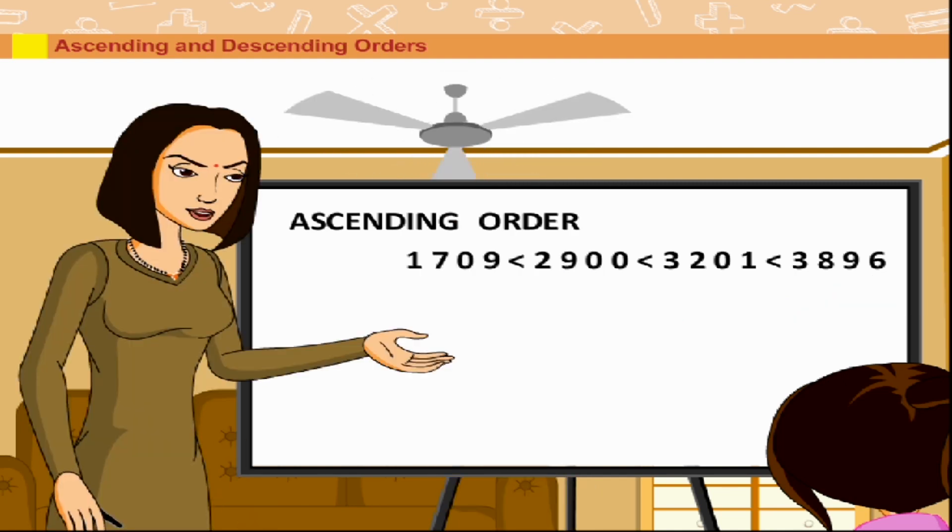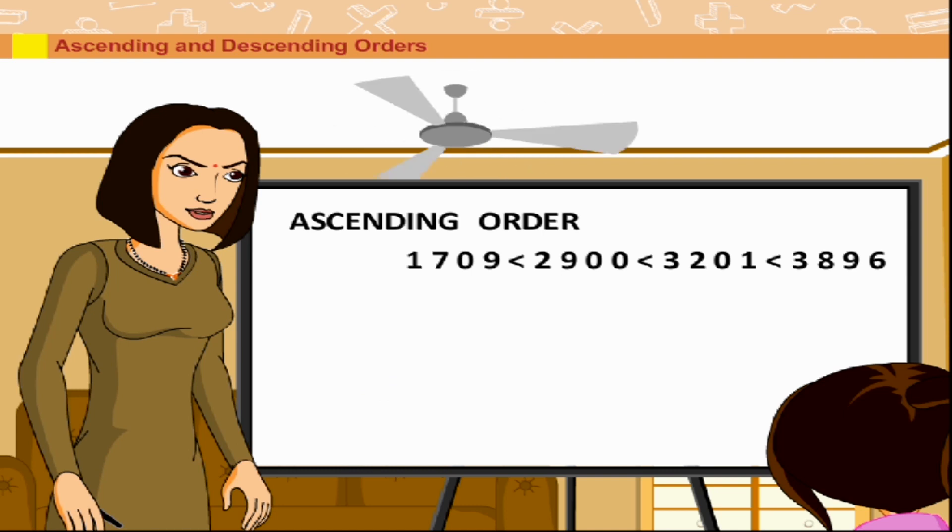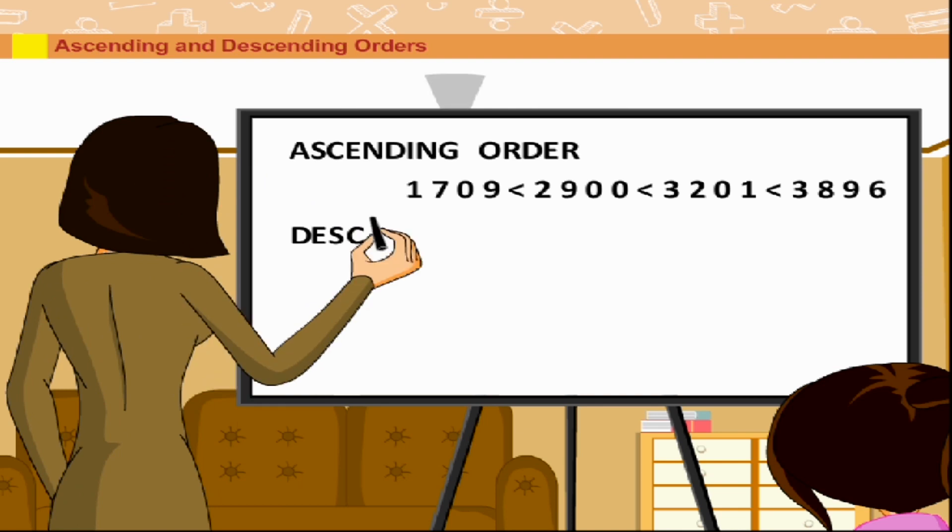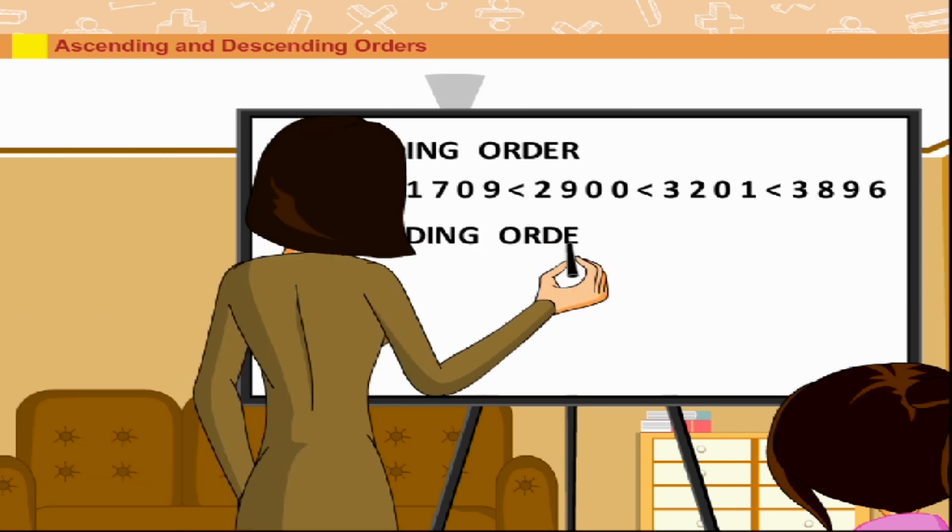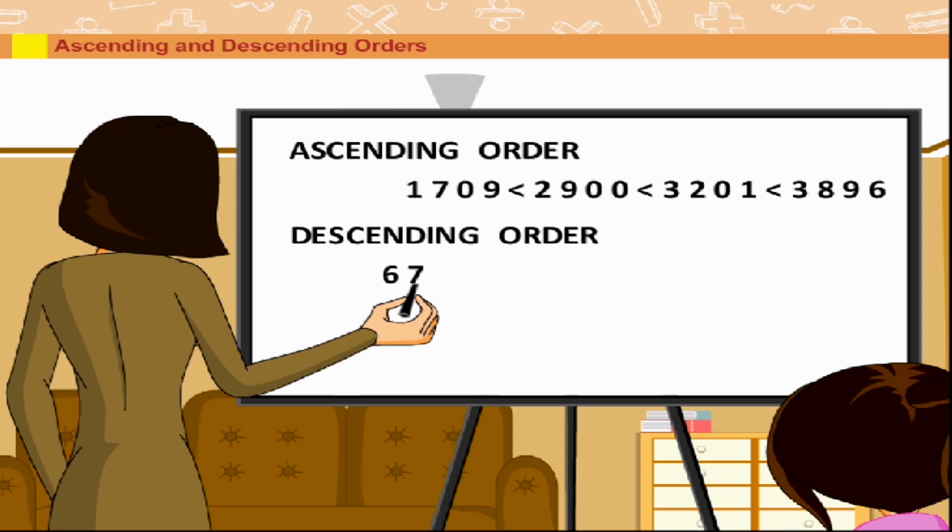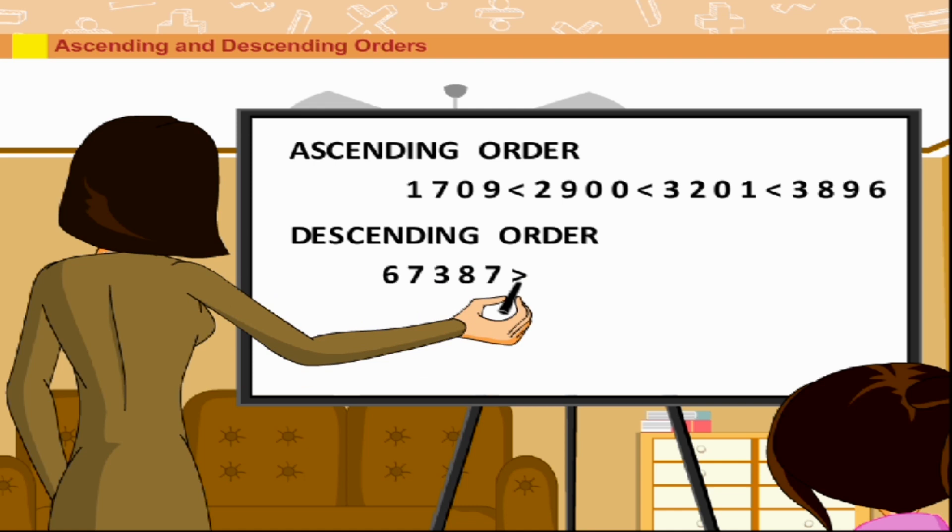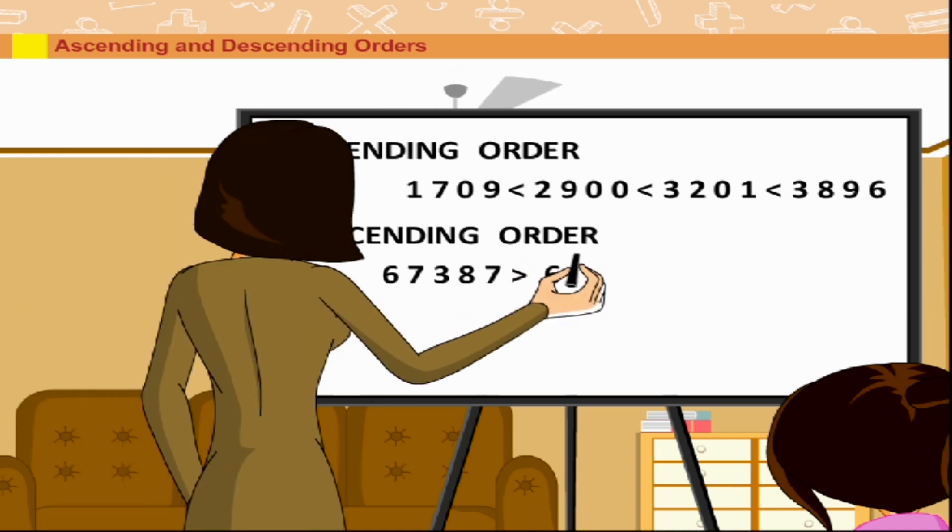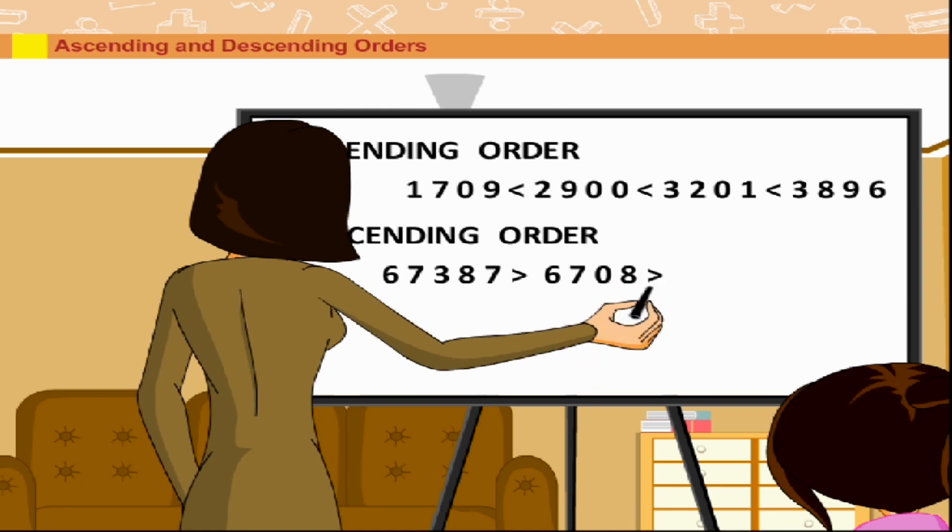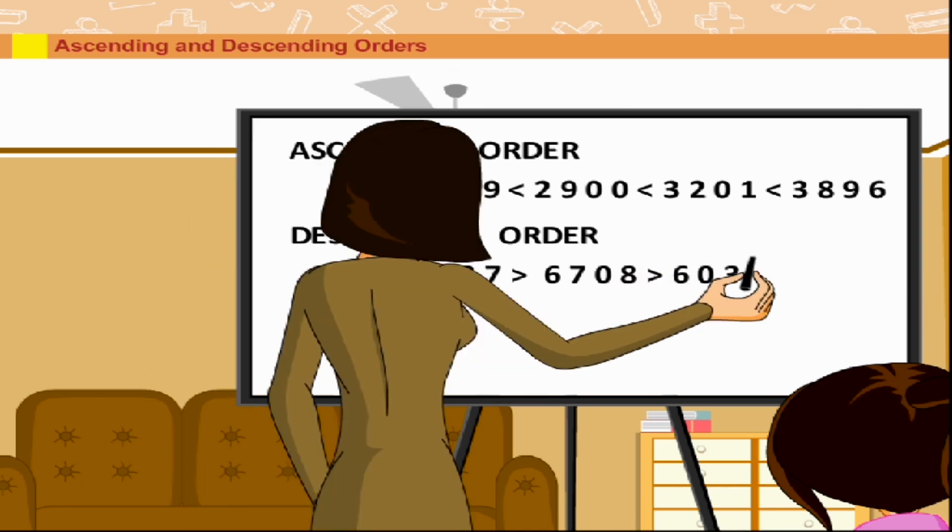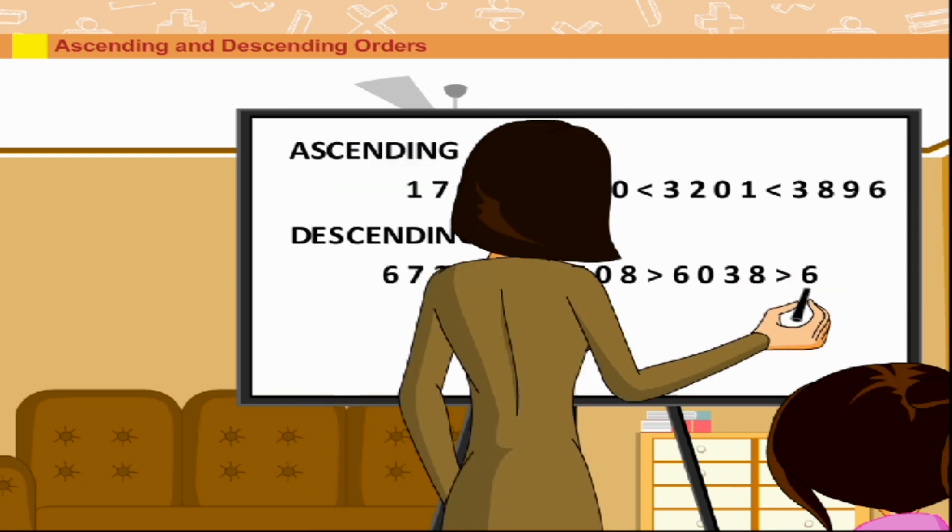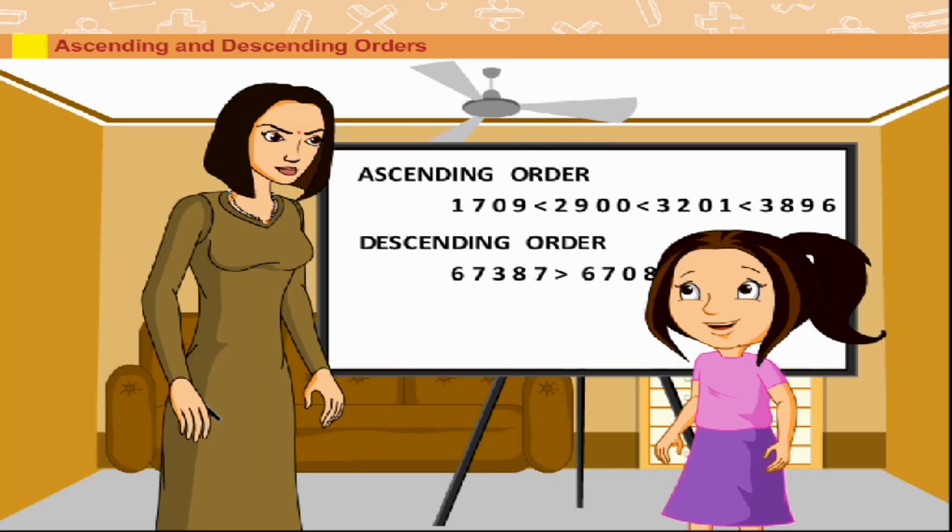Similarly, when we arrange the numbers in decreasing order, we say that the numbers are arranged in descending order. For example, 67387 is greater than 6708 is greater than 6038 is greater than 6009. Suman says, Thank you, mother.